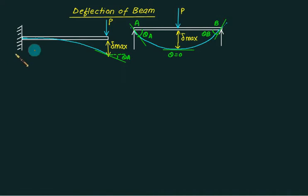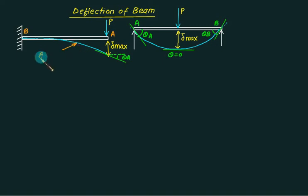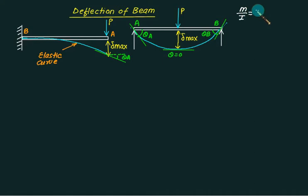We want to develop the relation for delta, theta, force, and whatever the load may be — either UDL or otherwise. This curve is called the elastic curve. Till now we have the knowledge of bending; the flexure equation is M/I = σ_b/y = E/R, where R is called the radius of curvature.